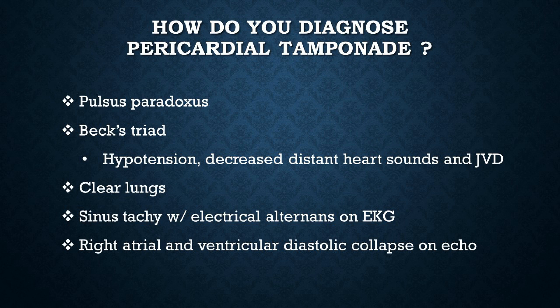Keep in mind that sudden accumulation of as little as 500 mL of fluid in the pericardium will lead to an acute presentation. But if the accumulation develops slowly and chronically over months, the pericardial sac can accumulate more than 2 liters of fluid before symptoms actually occur. The symptoms include pulsus paradoxus — a drop in systolic blood pressure of more than 10 mmHg on inhalation.